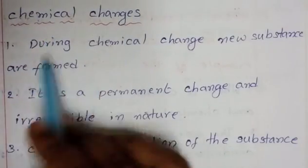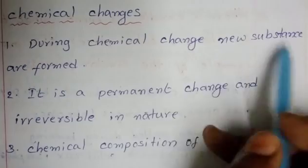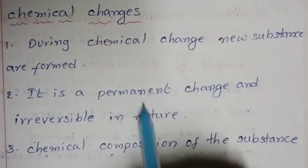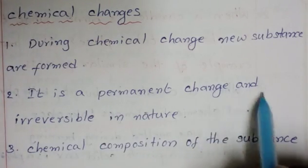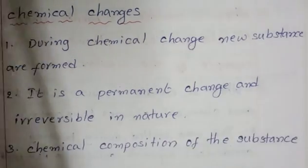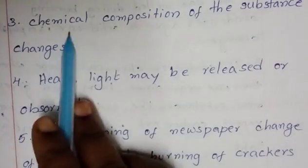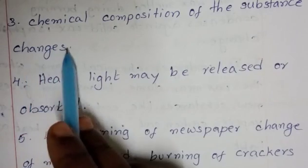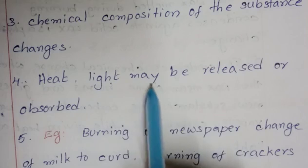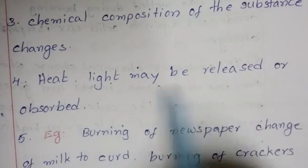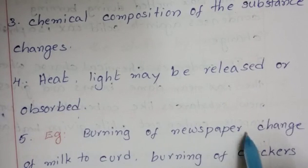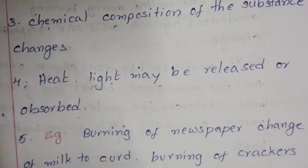Chemical changes: during a chemical change, new substances are formed. It is a permanent change and not reversible in nature. Chemical composition of the substance changes. Heat and light may be released or absorbed. Examples: burning of newspaper, change of milk to curd, burning of crackers, etc.